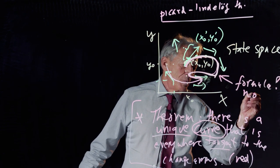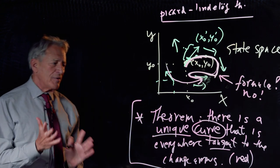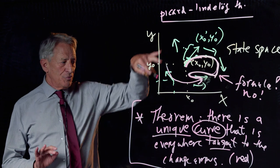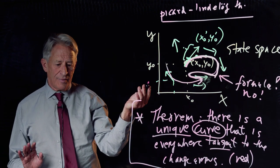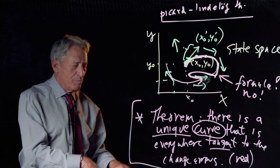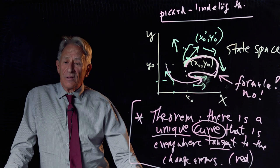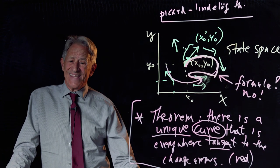And the answer is almost always no. So therein hangs the problem. There is a unique red curve. And, so to speak, God knows it. But she's not telling us what the formula is. And the formula, by and large, does not exist.